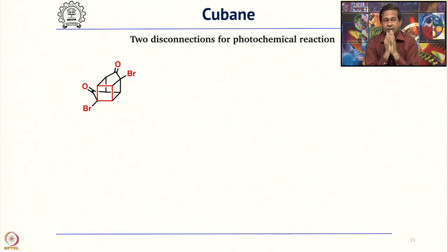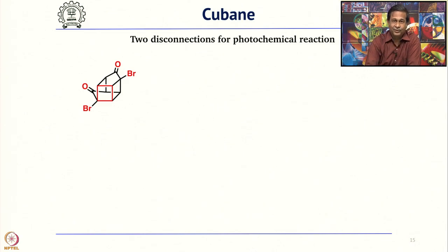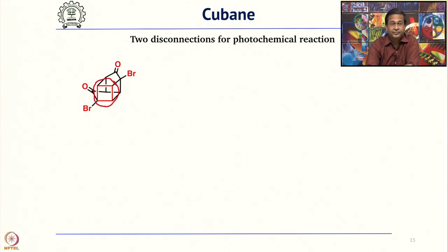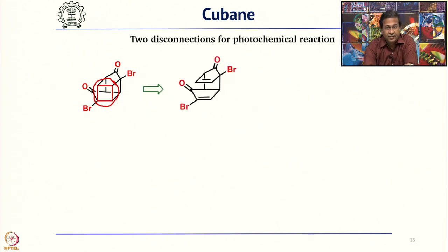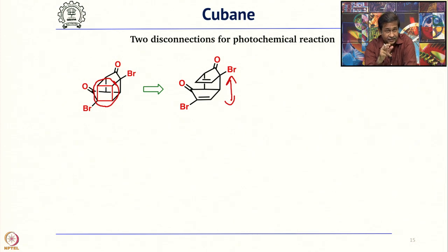Now we should do a photochemical disconnection — look for a four-membered ring and try to disconnect it. Take the front four-membered ring: if you make it using 2+2 cycloaddition, the precursor has two double bonds. This can undergo 2+2 cycloaddition, and interestingly when you do this, two four-membered rings are formed.